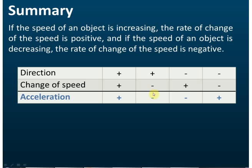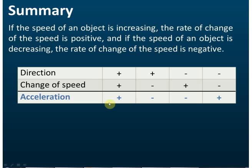If the direction is positive but the change of speed is negative — the speed goes down — then the acceleration is negative, and this is deceleration. If the direction is negative but the change of speed is positive, the acceleration is still negative but this is NOT deceleration because the speed increases. If the direction is negative and the change of speed is negative, the acceleration is positive, and this is deceleration even though the acceleration is positive.